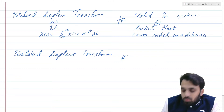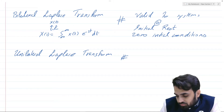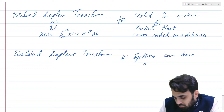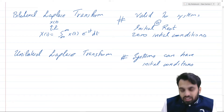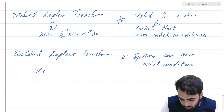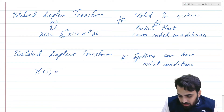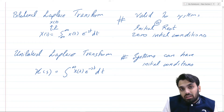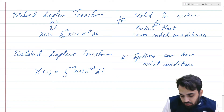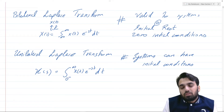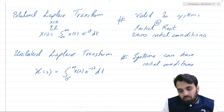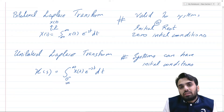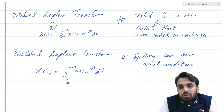For unilateral Laplace transforms, we can handle systems which have initial conditions. Mathematically, X(s) for the unilateral Laplace transform has the same integrand x(t) e^(-st) dt, and the terminating limit of integration is still infinity. But the starting limit is not minus infinity as in the bilateral case — now we have 0 minus. So the integration starts from 0 minus and terminates at infinity, which relates directly to the initial conditions.